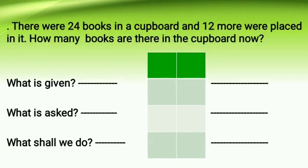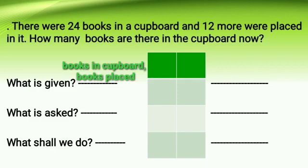Let us read our second story. There were 24 books in a cupboard and 12 more were placed in it. How many books are there in the cupboard now? So children, what is given? Books in cupboard and more books placed. What is asked? Total number of books. What shall we do? We are going to do addition.